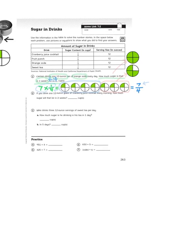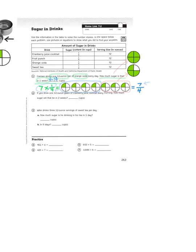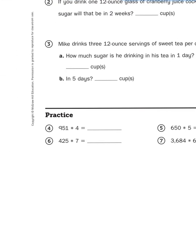Mike drinks three 12-ounce servings of sweet tea per day. How much sugar is he drinking in his tea in one day? Well, again, you'd have to consult the table. Sweet tea is slightly better for you because it only contains a sixth of a cup. So, again, you'd be multiplying three times one-sixth and then multiplying that by five days. But I am confident that you'll be able to solve that on your own.